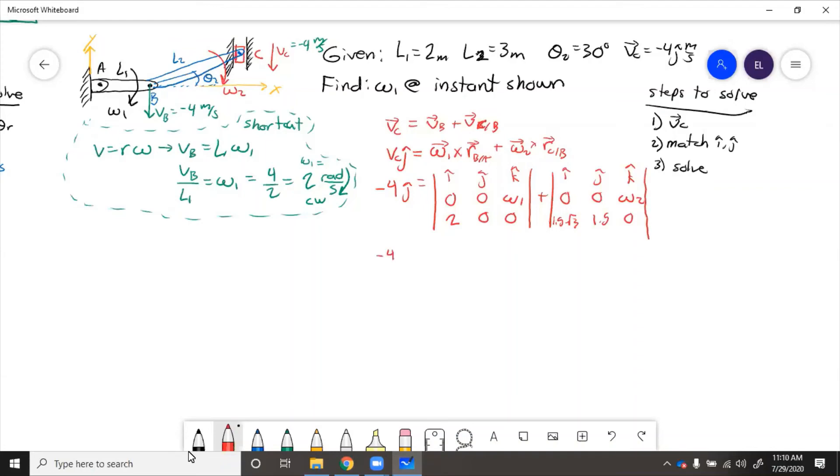So negative 4 j equals, we do this cross product, we'll get nothing in the i, so minus j times negative 2 omega 1, and then plus, here in the i we'll have negative 1.5 omega 2, and then minus the negative 1.5 square root 3 omega 2 in the j.